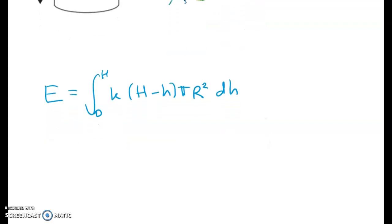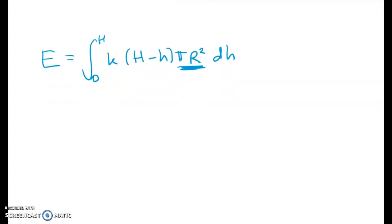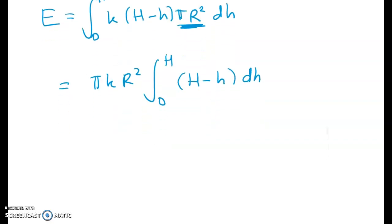Okay so I've just substituted in my area formula here and now I'm going to pull all of the constants out to the front of that integral. So we get pi times k big R squared. Just be really careful to distinguish between the big H and the little h because big H is a constant.